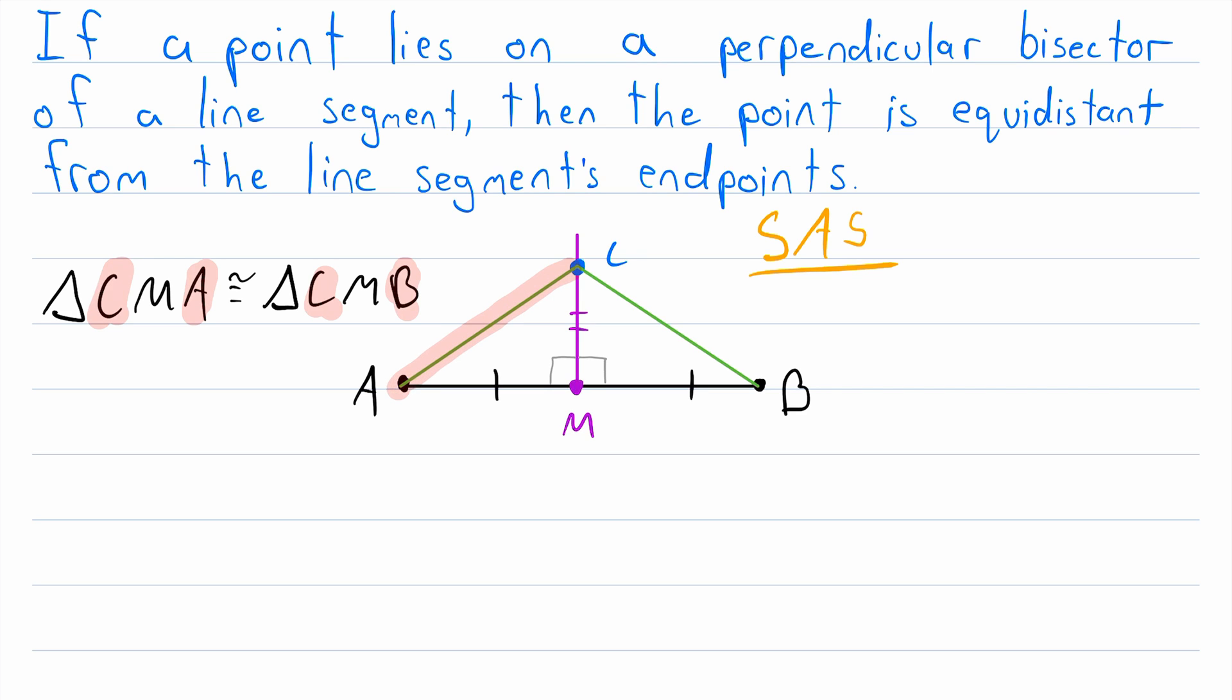This side CA, this side CB. Therefore, those sides are congruent because they are corresponding sides of two congruent triangles. We'll use these three lines to mark that.